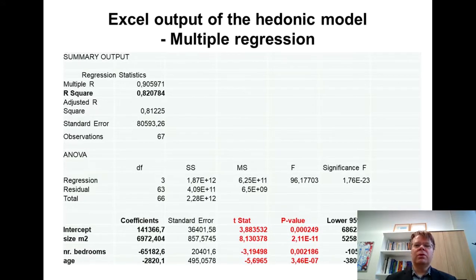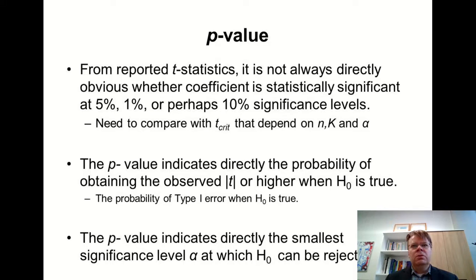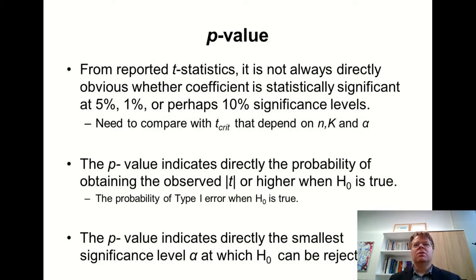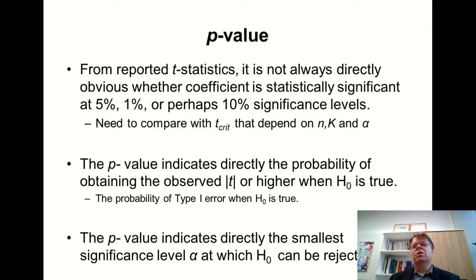I'll explain the meaning of the p-value. If you want to test significance of the t-statistic at different levels of significance — 5%, 1%, or perhaps 10% — you need to find the critical values separately for each significance level. I personally like the p-value very much because you can directly read it: the p-value indicates the probability of obtaining an absolute value of t that is higher when the null hypothesis is true.